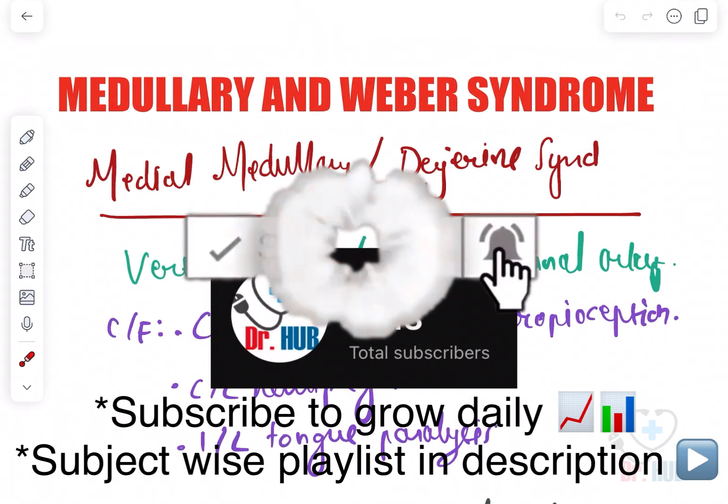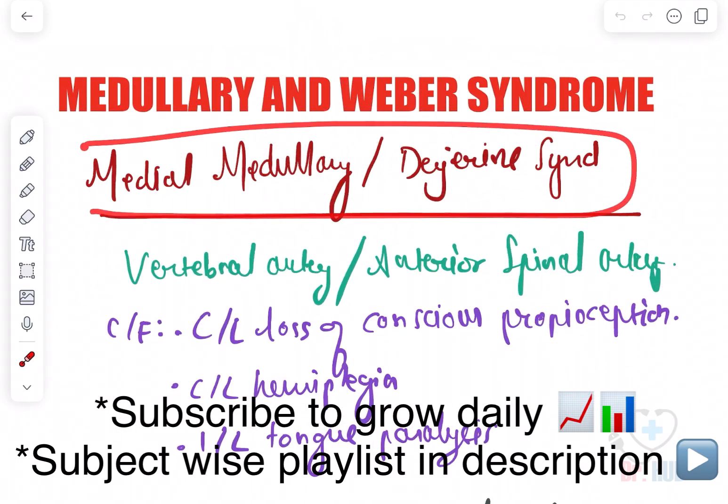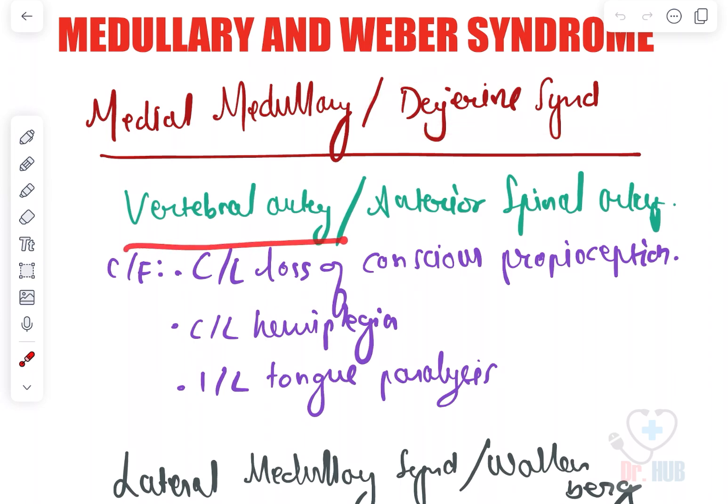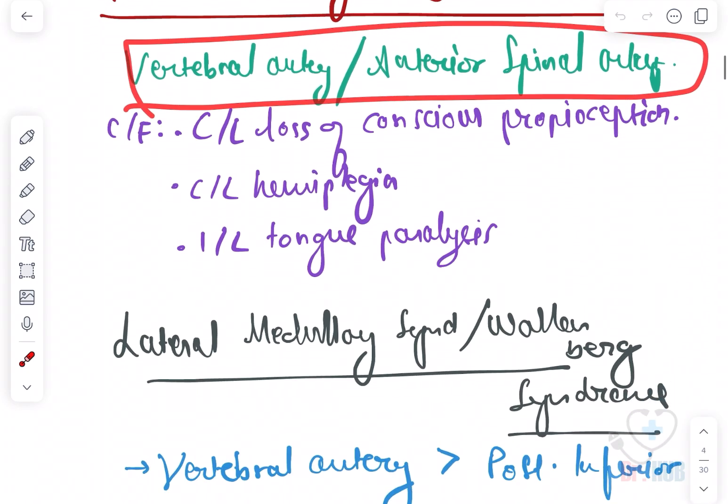Medullary and Weber syndrome. First, we're looking at the medial medullary or Dejerne syndrome. This involves the vertebral artery and the anterior spinal artery. The clinical features include contralateral loss of conscious proprioception.